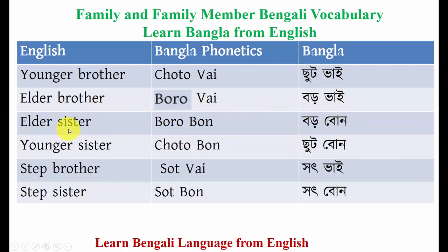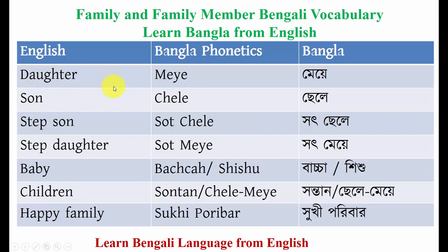Younger means 'choto' and brother means 'bhai.' Elder sister is 'boro bon' and younger sister is 'choto bon.' Stepbrother — 'step' in Bengali means 'sot,' so stepbrother is 'sot bhai' and stepsister is 'sot bon.' Daughter means 'mey,' son means 'chele,' stepson is 'sot chele,' stepdaughter is 'sot mey.' Baby in Bengali means 'matja' or 'shishu.'